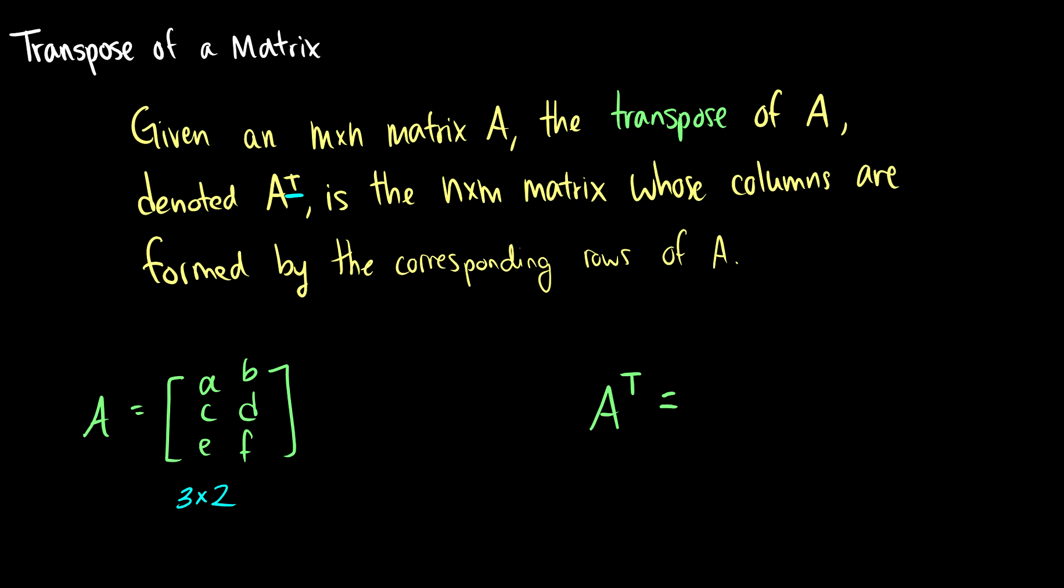So if we have A, which is [A, B, C, D, E, F], then this first row, or this first column A, C, E, becomes the first row.